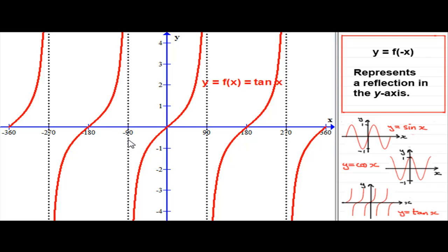Lines at minus 270, minus 90, 90 and 270 degrees. So we're going to look at replacing the x with minus x. So we've got f of minus x, y equals tan of minus x. Again, you might like to pause the video, have a go at sketching this graph. All right. Let's see how you got on.